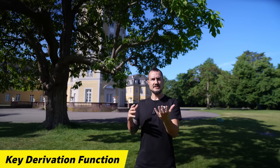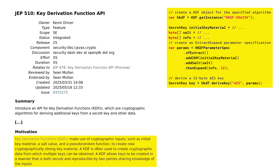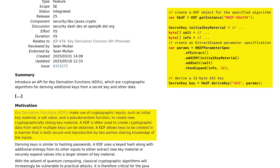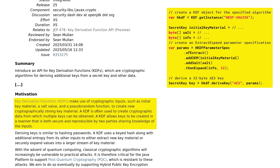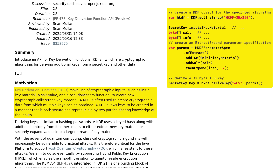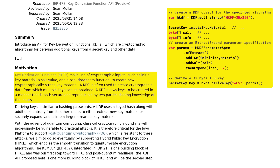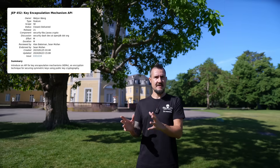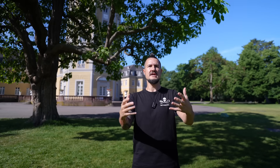With language features covered, let's turn towards APIs. Key Derivation Functions — KDFs — make use of cryptographic inputs such as initial key material, a salt value, and a pseudorandom function to create new, cryptographically strong key material. A KDF is often used to create cryptographic data from which multiple keys can be obtained, and allows keys to be created in a manner that is both secure and reproducible by two parties sharing knowledge of the inputs. After the key encapsulation mechanism in JDK 21, the KDF API — which is finally in JDK 25 — is the second step towards supporting hybrid public key encryption, enabling a smooth transition to quantum-safe encryption algorithms. This is of critical importance so that data intercepted and stored today cannot be readily decrypted in a world with quantum computing.